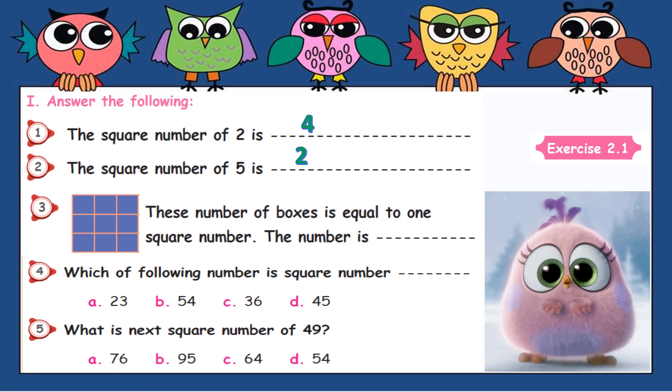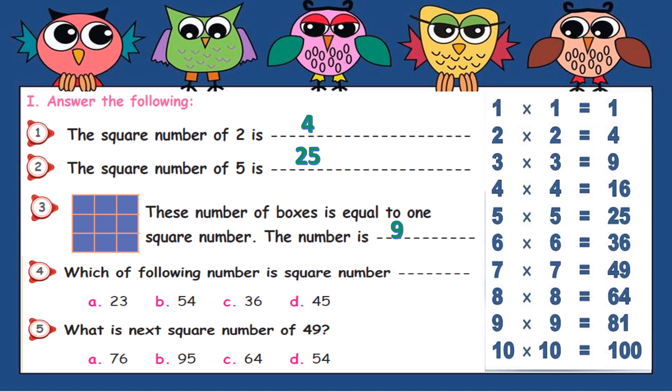Then third sum, we have to count all these boxes only, so the answer is nine. Fourth one, which of the following number is the square number? So which number? Shall we check? Is there a square number? So in this, 23 is not on the right side, isn't it? Look at this corner, 1, 4, 9, 16, after that 25 only is there, there is no 23.